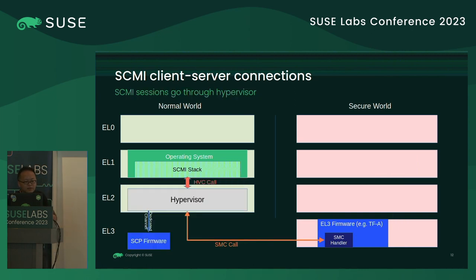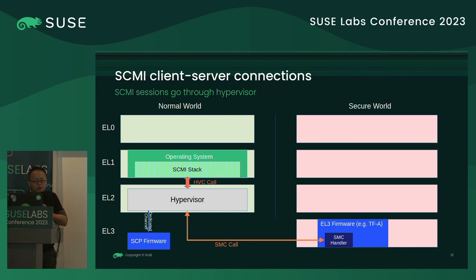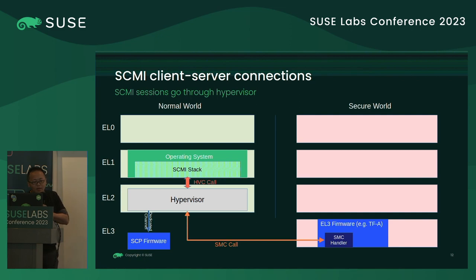A third case is where the normal world runs a hypervisor instance. The SCMI request is delivered through the SCMI stack, then uses an HVC call to carry the data to the hypervisor. The hypervisor can then forward the request to either a normal-world SCP firmware or the SCMI server running in the secure world, depending on how you implement your design.